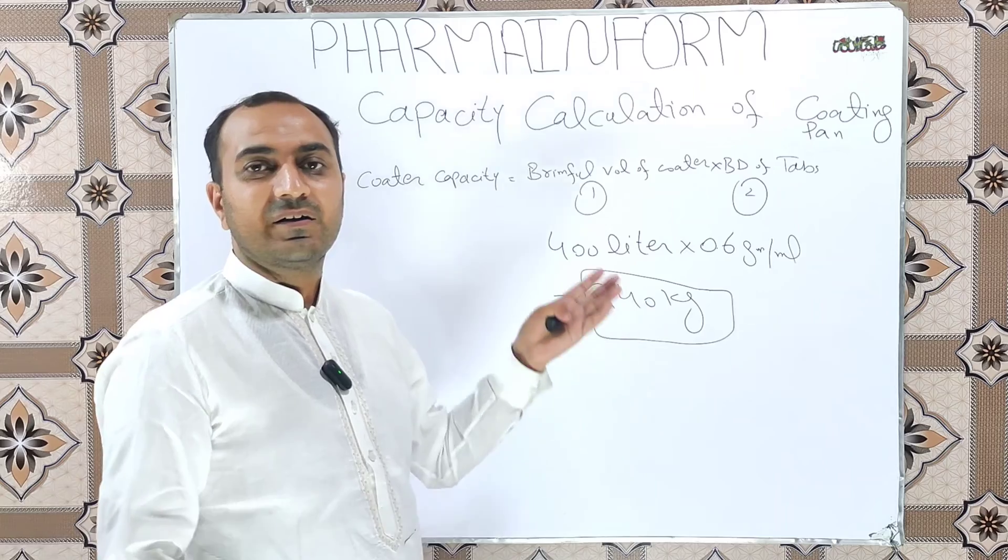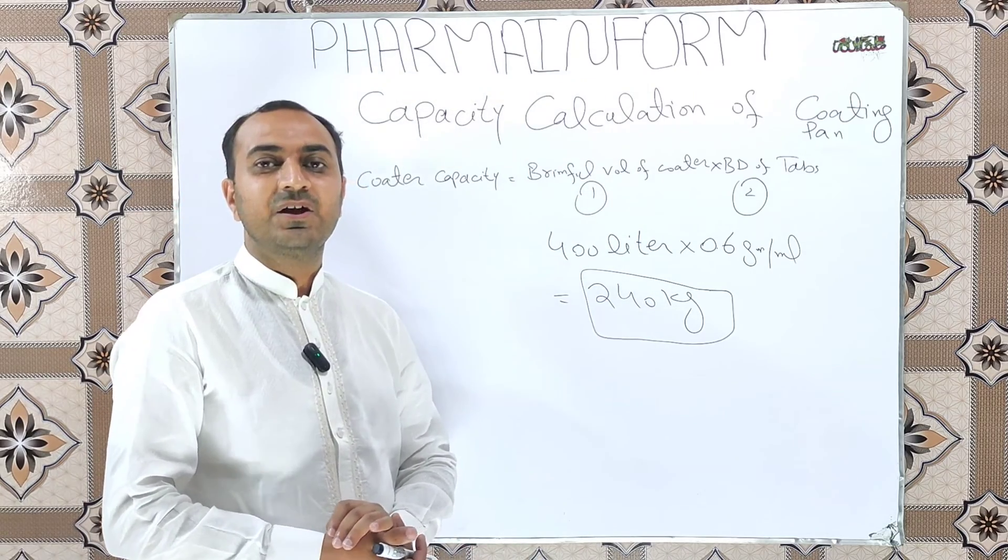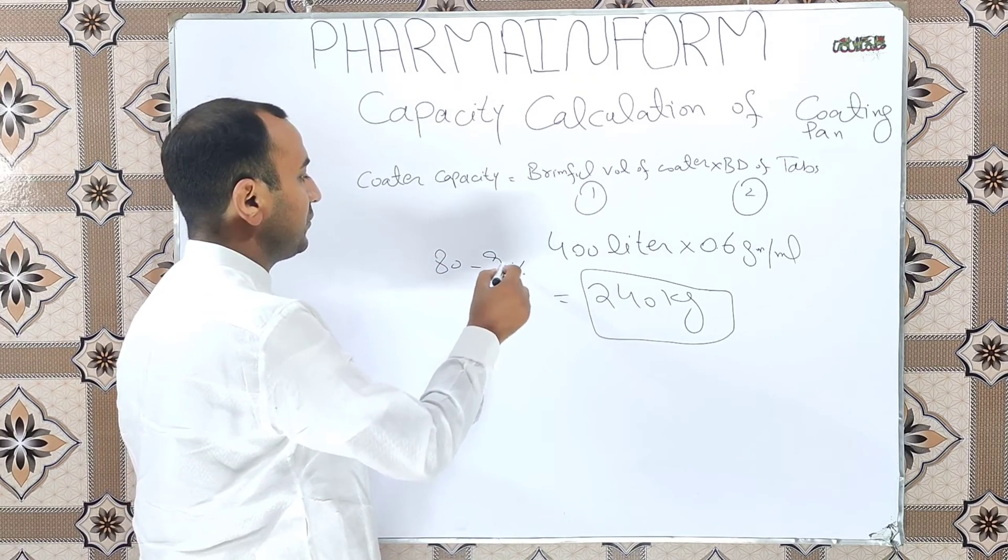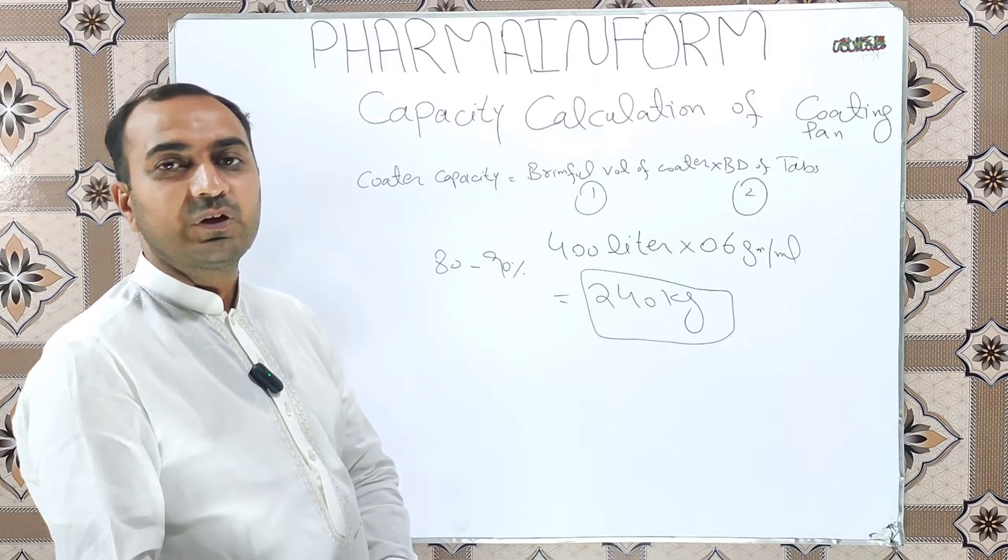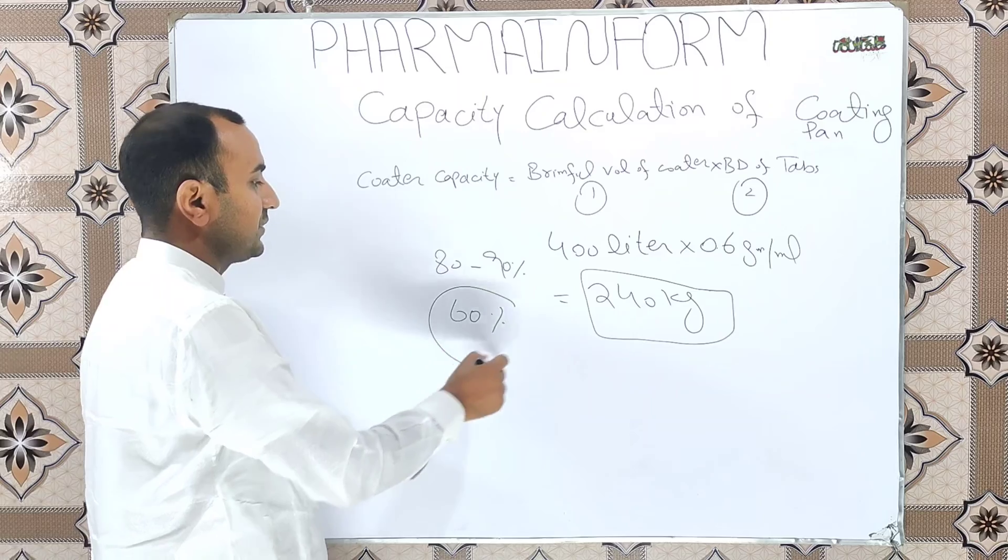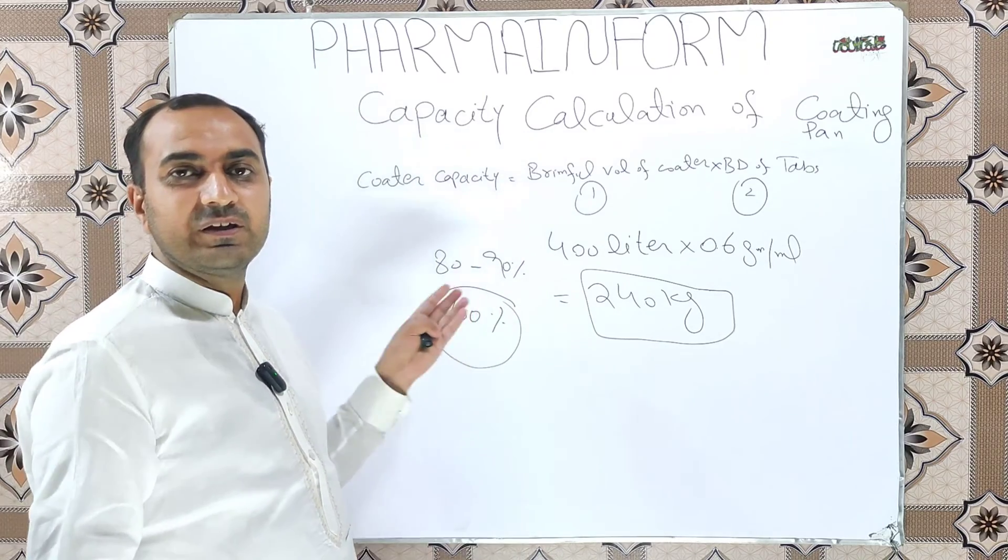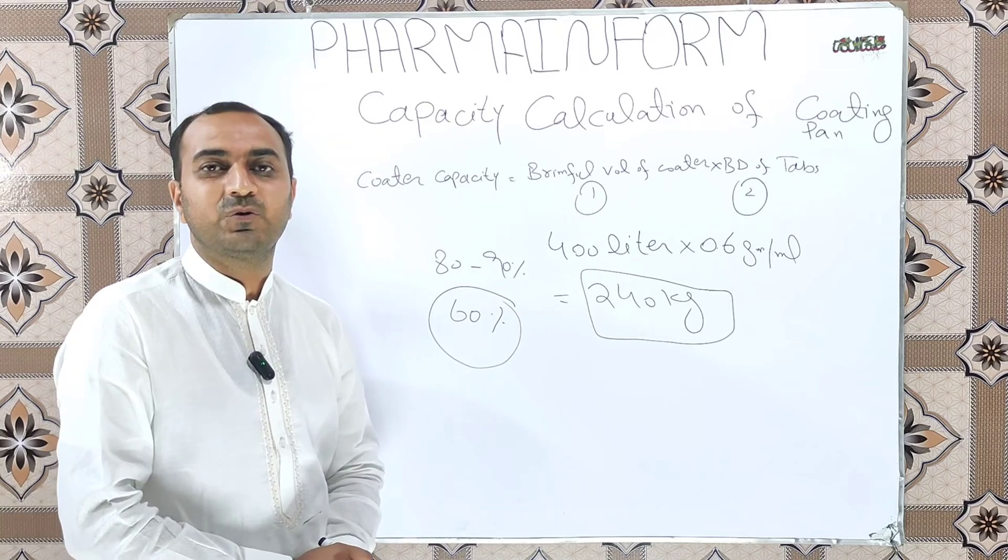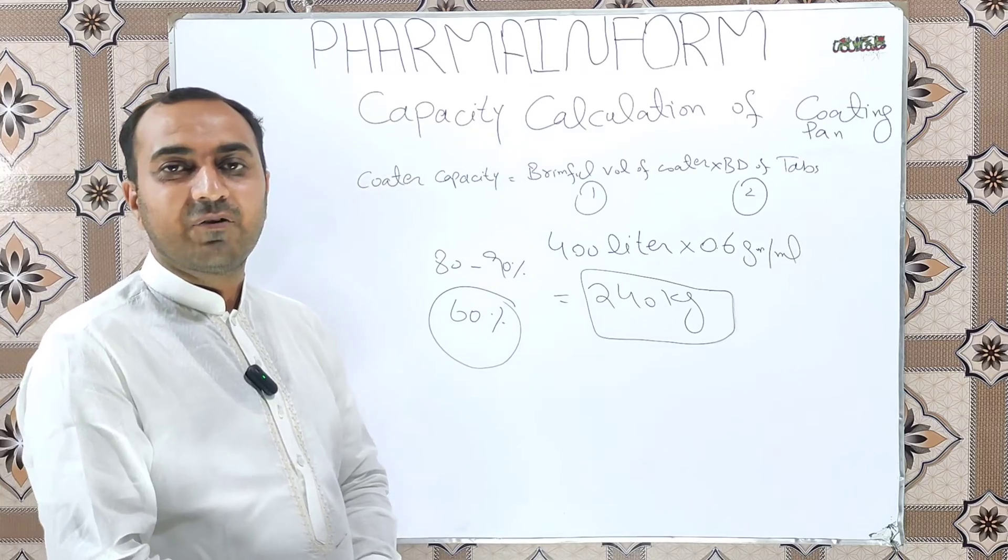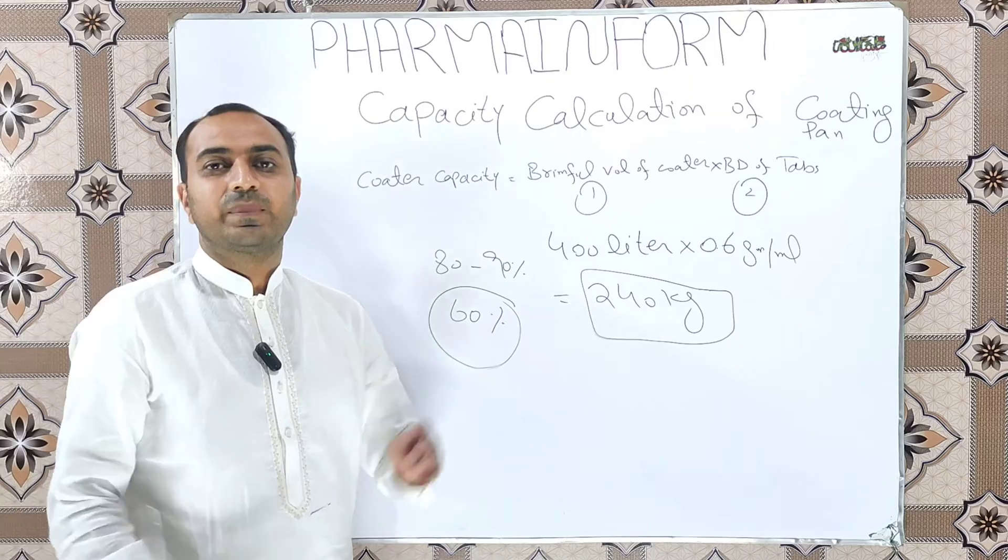But we do not take the 100% capacity for the practical coating of the batch. We usually take maximum of 80 to 90% of the volume of the coating pan, and for the lowest side we take usually 60%. We take 60% on the lowest side because our baffles make our tablet rotate easily and our tablets are above the baffles installed in the coating pan.